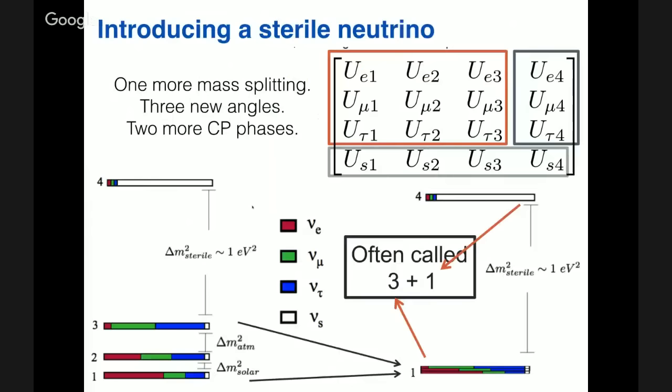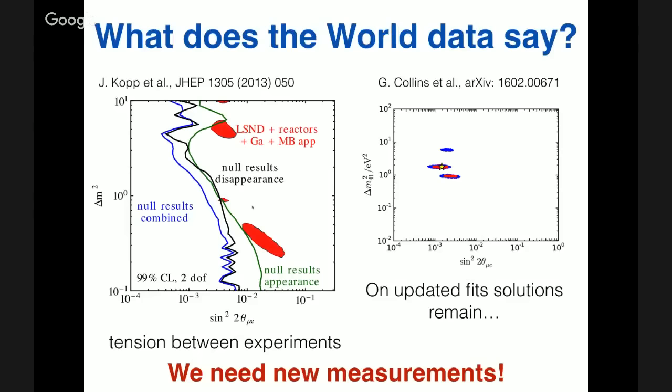To introduce the extra sterile neutrino, one adds a fourth neutrino mass eigenstate that can be lighter or heavier than the active neutrinos, adding one mass split, three angles, and two CP phases. In the 3+1 model, the three active neutrinos are more or less degenerate because the mass splitting is much smaller than the sterile neutrino mass splitting. In the 1+3 model, the sterile neutrino is lighter than the active ones.